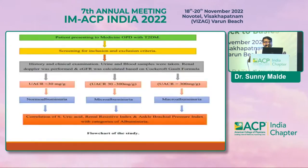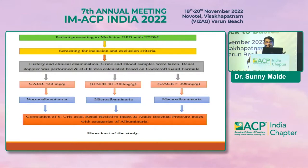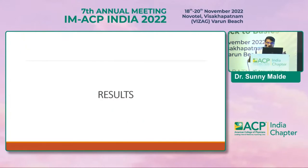This flowchart shows the study process. Patients presenting to the medicine OPD with type 2 diabetes mellitus were screened using inclusion and exclusion criteria. History, examination, urine and blood samples were collected, renal Doppler was performed, and eGFR was calculated using the Cockcroft-Gault formula. Patients were divided into three categories: UACR less than 30, UACR 30 to 300, and UACR more than 300, and then correlated with serum uric acid, renal resistivity index, and ankle brachial pressure index.